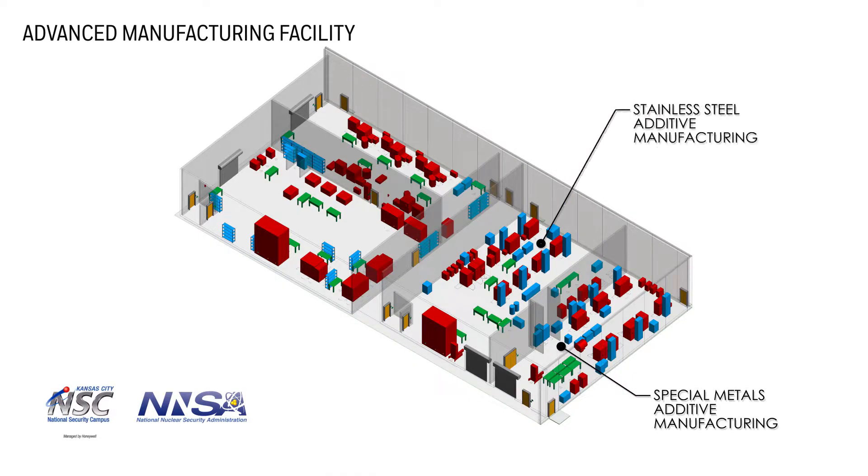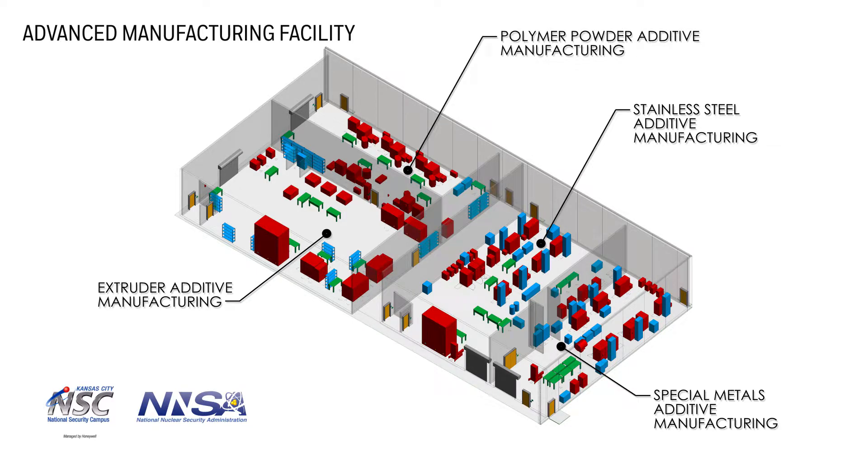We built two basic facilities, each separated into two rooms. One facility is for metal materials, various metals. The other one is for various polymers, which need to be separated. They have different environmental requirements.